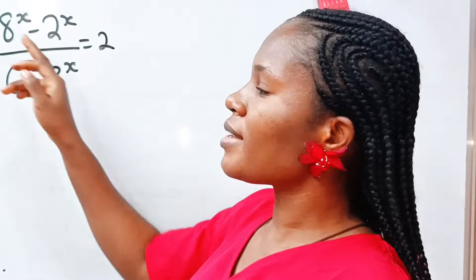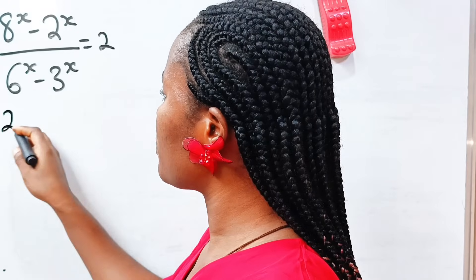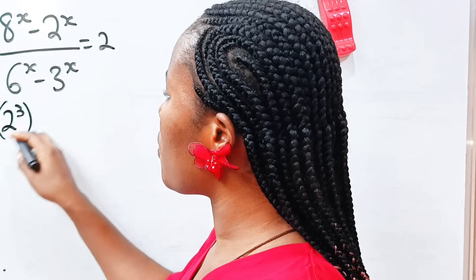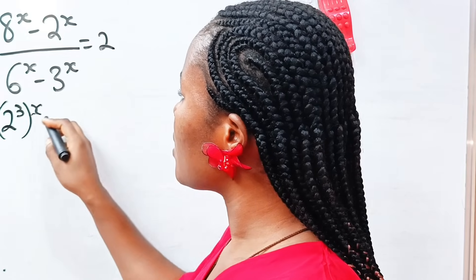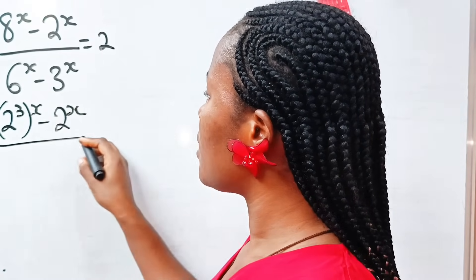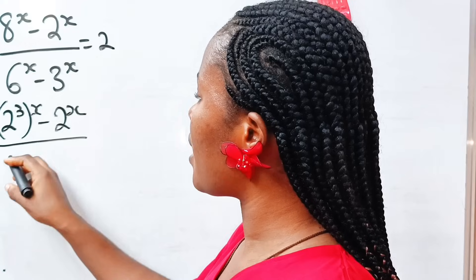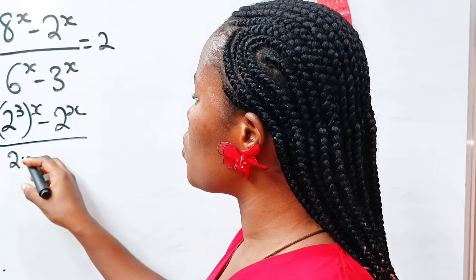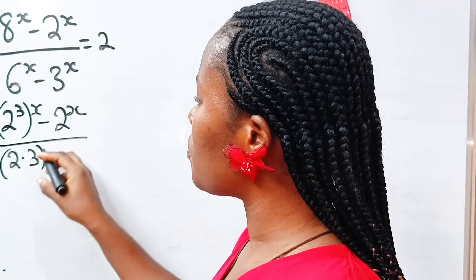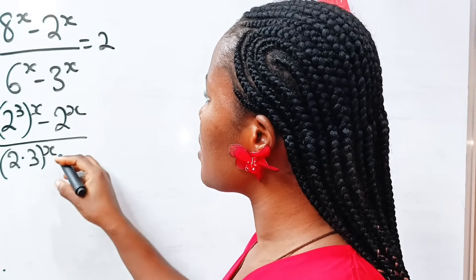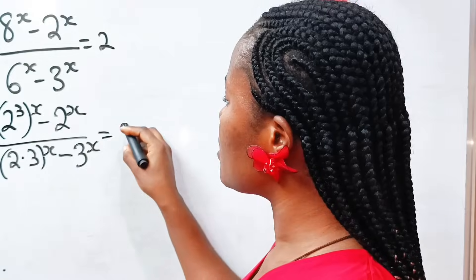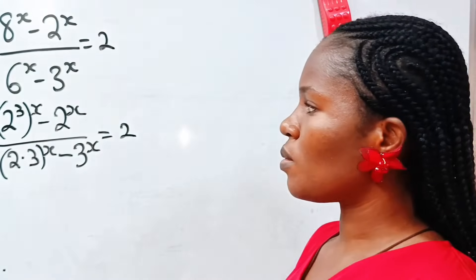So we write this as 2 to the power of 3, raised to the power of x, minus 2 to the power of x, divided by 2 multiplied by 3 to the power of x, minus 3 to the power of x, is equal to 2.